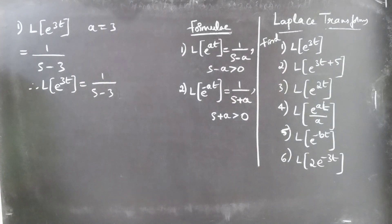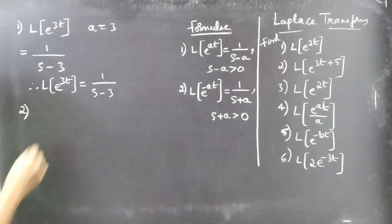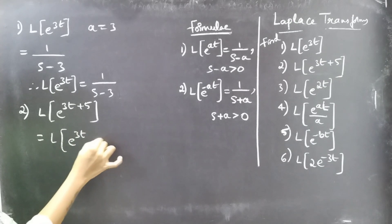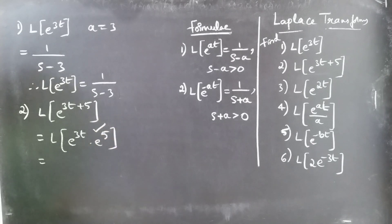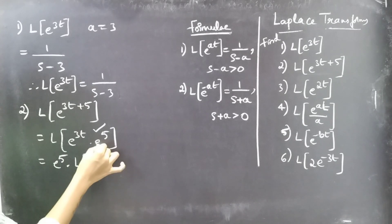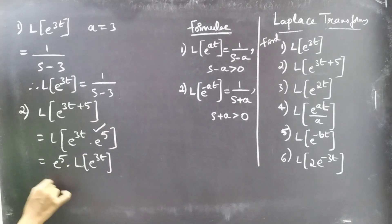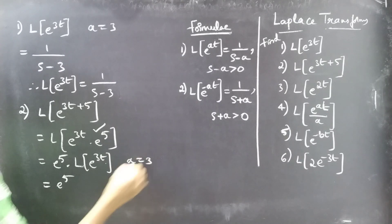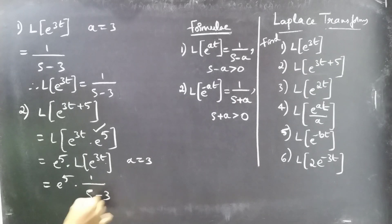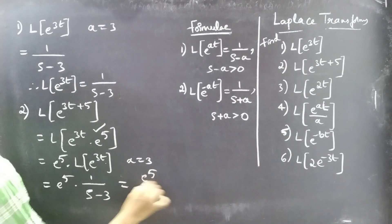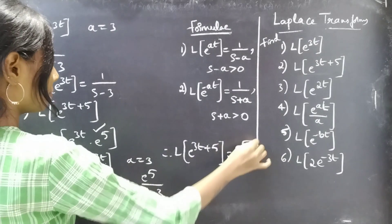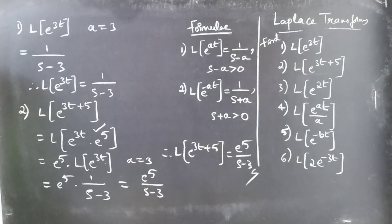Coming to the second one: L{e^(3t+5)}. We can write this as e^(3t) × e^5. Since e^5 is constant, take it outside the brackets: e^5 × L{e^(3t)}. Comparing with e^(at) for a = 3, we get e^5 × 1/(s-3). Therefore L{e^(3t+5)} = e^5/(s-3).